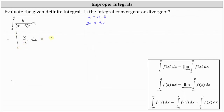The definite integral is equal to the limit as a approaches zero from the right. We're approaching zero from the right because as we approach zero from the right, we are in the interval of integration. Then we have the integral from a to one of six divided by u squared, written as six u to the power of negative two, du.